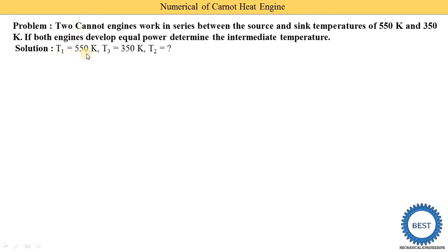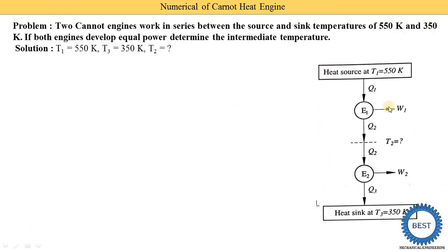We write down the given data. Source temperature T1 is 550K. Sink temperature is considered as T3, because we need to find out the intermediate temperature T2. So T3 is 350K. Engine one works between T1 and T2, and engine two works between T2 and T3. Work done W1 equals W2, so we write W1 = W2 = W according to the given data.